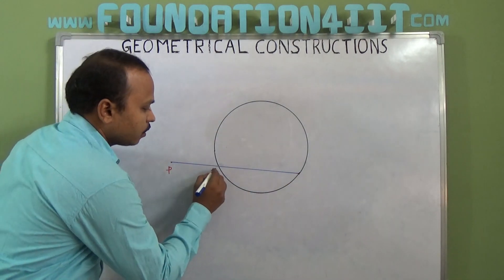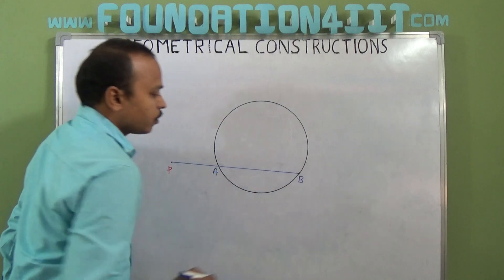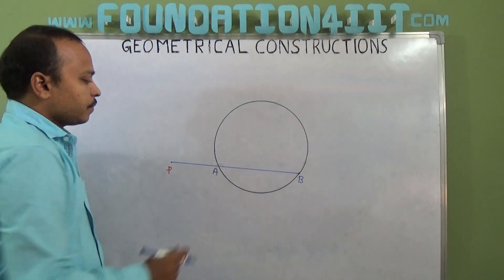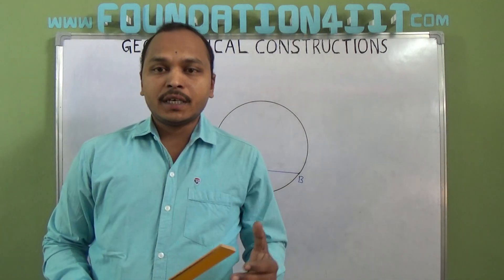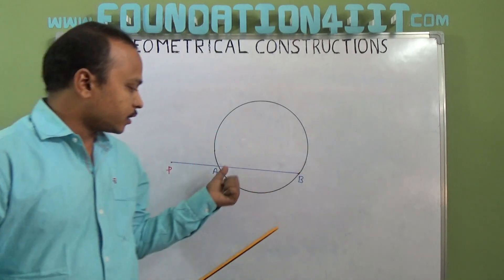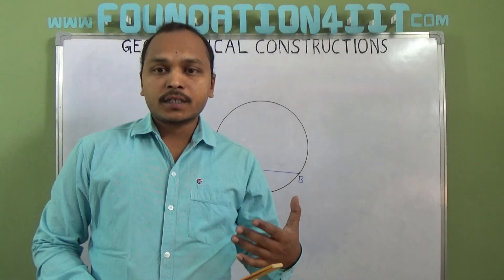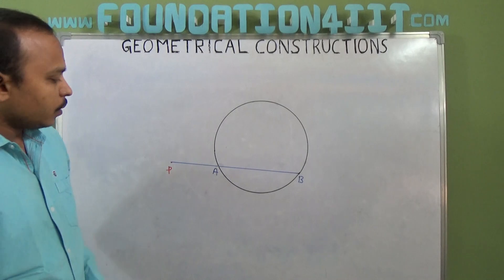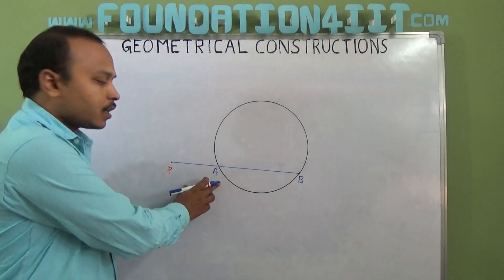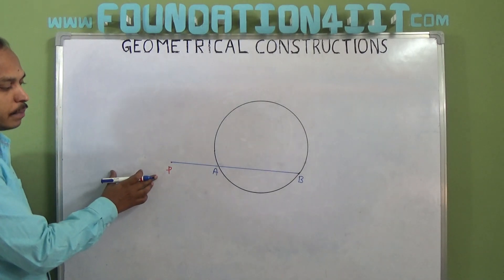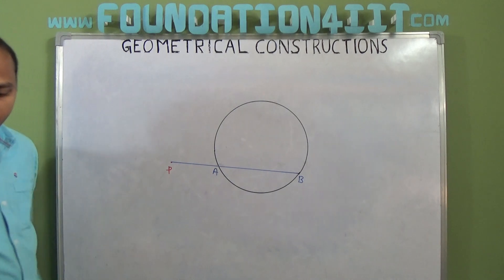It touches at point A and this is B. One point is A and B. From the external point you should draw the secant first, then where it touches that is A and B. Next, PA, how much distance is there, you have to extend this to some PD, so extend this point.